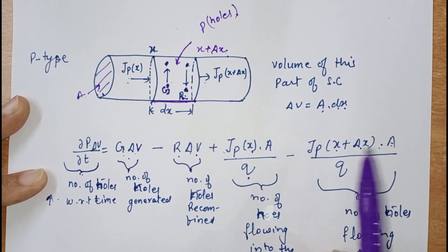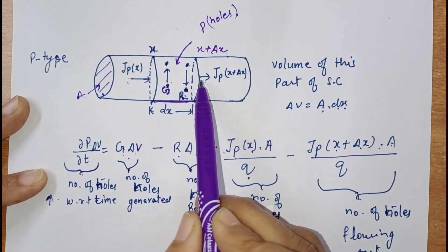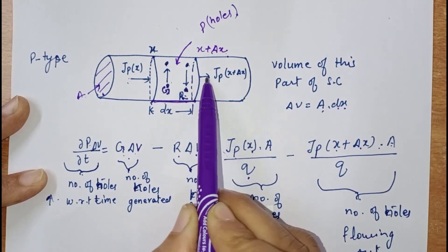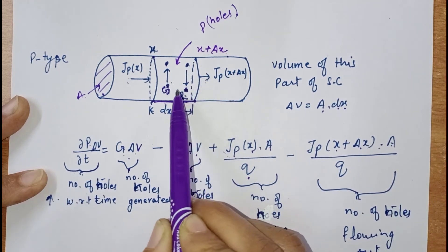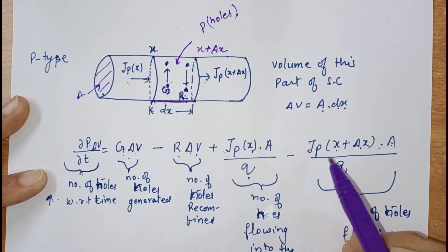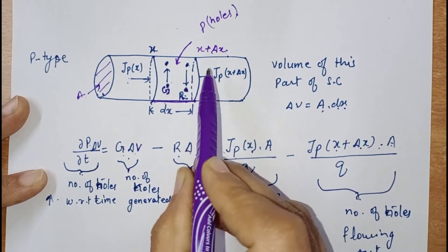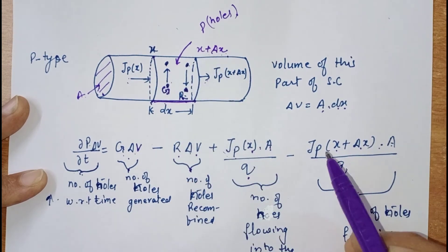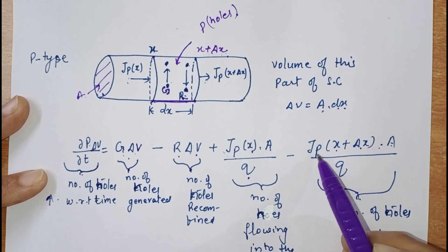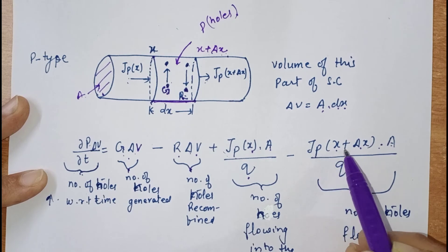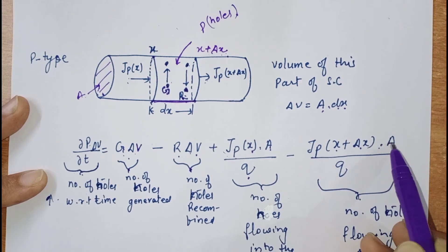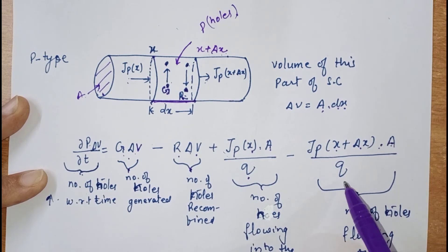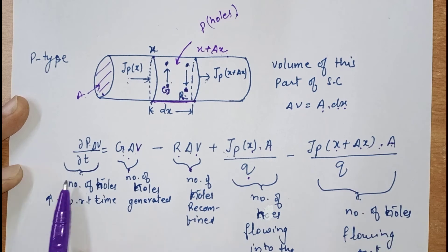We will subtract the number of holes that are leaving this particular slice at x plus Δx. This is given by jp(x + Δx) multiplied by the cross-sectional area, divided by the charge.